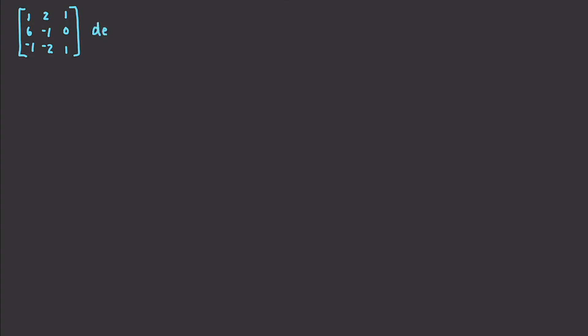We're going to start off with a three-dimensional matrix C, and I'm going to need a lot of space to cover all of this. Here is our three-dimensional matrix C. The formula we are going to be working with this time is a version of what we covered in part 28. You should definitely watch part 28 before continuing, otherwise you may be confused. We're going to get the determinant of our matrix C minus lambda times an identity matrix.